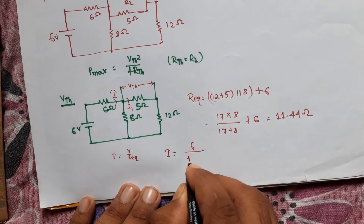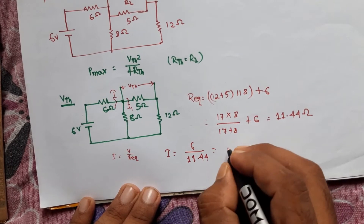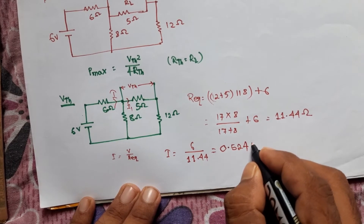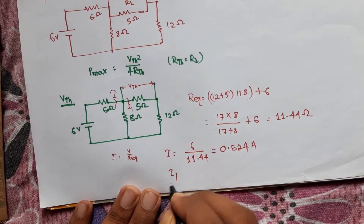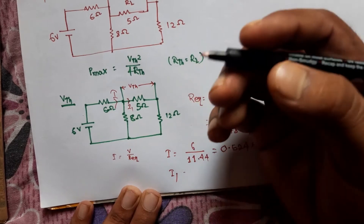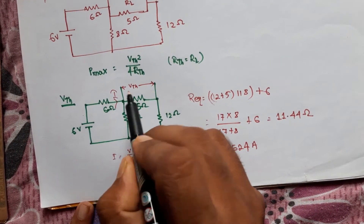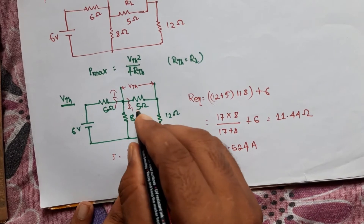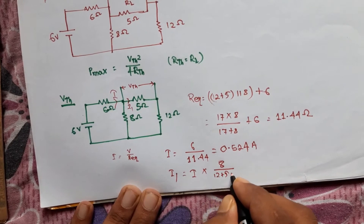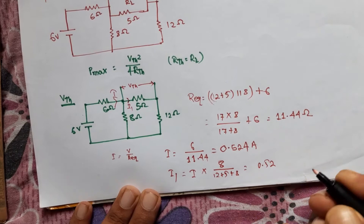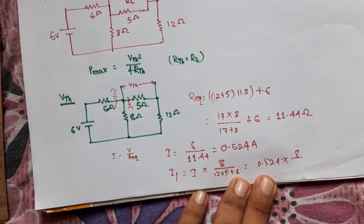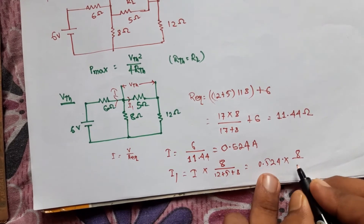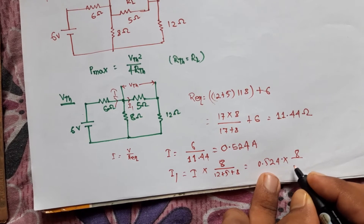The total current I = 6 / 11.44 = 0.524A. Then using the current division rule, I1 = I × (opposite branch resistance / sum of resistances) = 0.524 × 8 / (12 + 5 + 8) = 0.524 × 8 / 25 = 0.1678A.